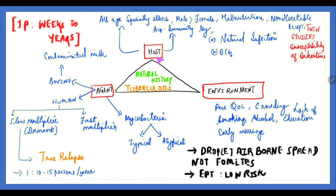Every host can get tuberculosis. BCG vaccine is given to prevent the severest forms of tuberculosis like miliary tuberculosis in early ages. Mostly tuberculosis attacks the elderly, especially men who are more exposed and malnourished people. In twin studies, they say twins can be susceptible to tuberculosis by inheritance. There is acquired immunity by BCG vaccination and natural infection by atypical mycobacteria.